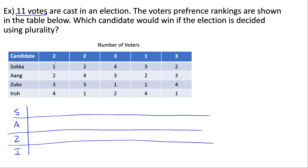In our first column, two voters ranked Sokka first, so they are voting for him. Two voters ranked Iro first, so they are voting for him. Three voters ranked Zuko first, so they are voting for him. One voter also ranked Zuko first, so they are also voting for Zuko. And three voters ranked Iro first, so they are voting for him.